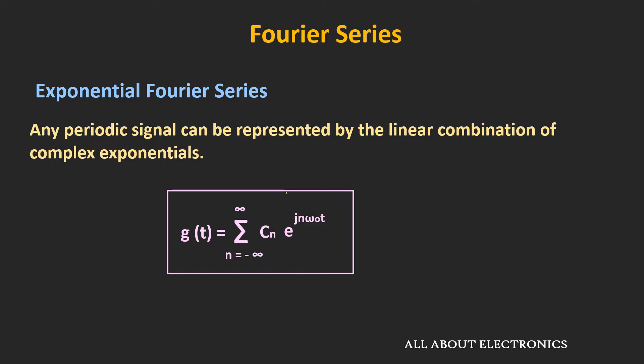If we have one periodic signal g with a time period T, then mathematically it can be expressed as the linear combination of complex exponentials, where ω0 is equal to 2π divided by T, n is varying from minus infinity to plus infinity, and Cn are the coefficients of these complex exponentials.